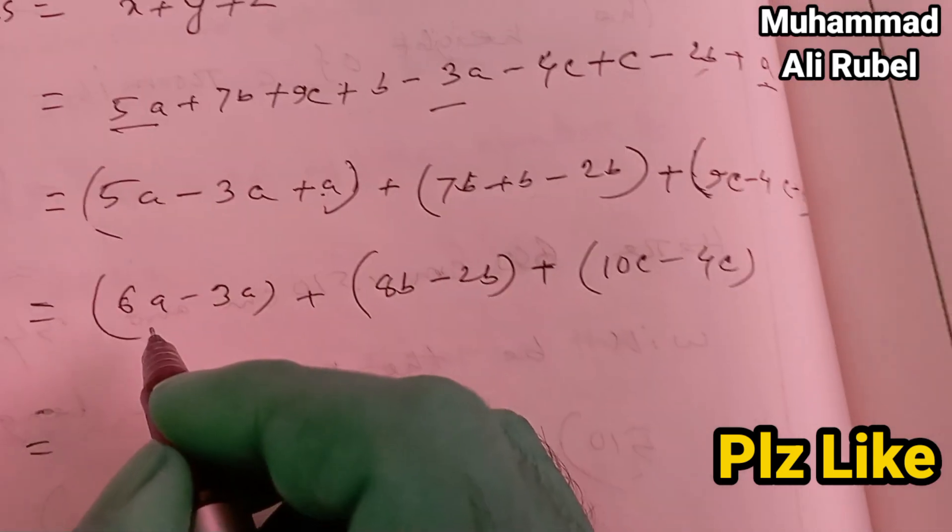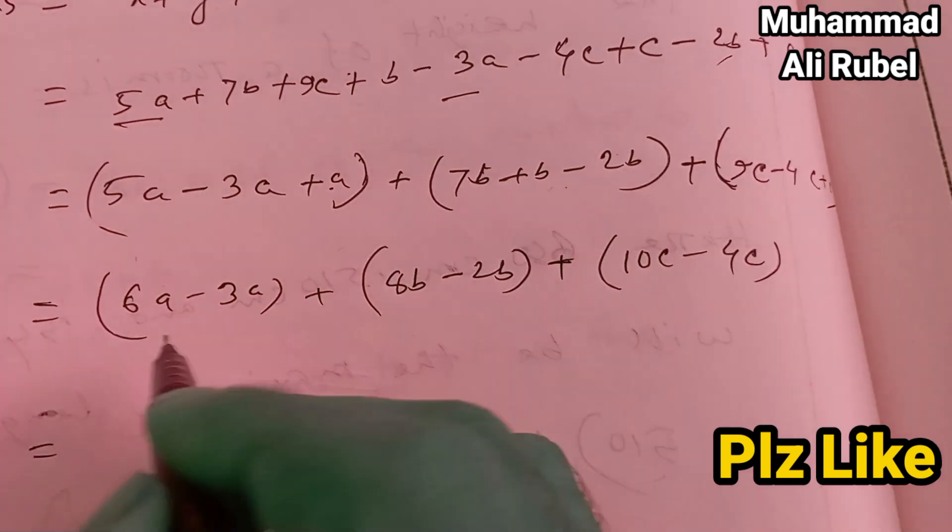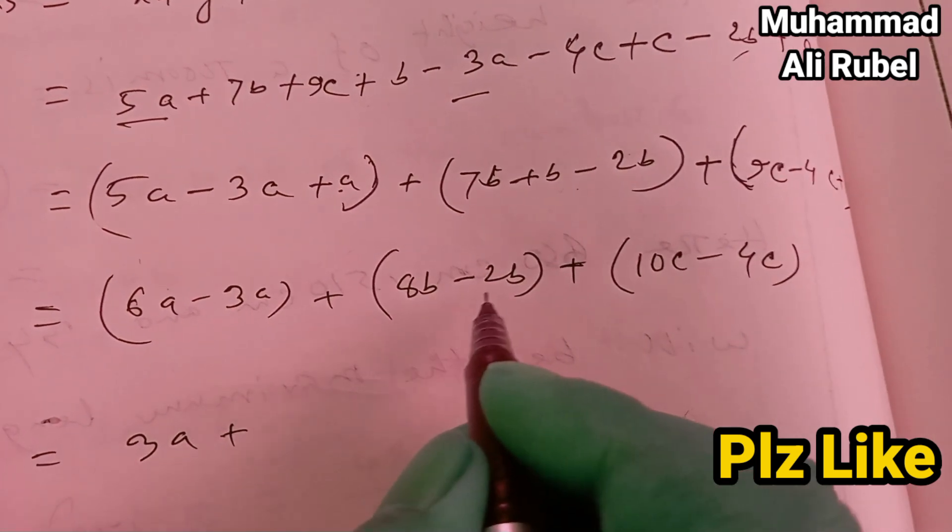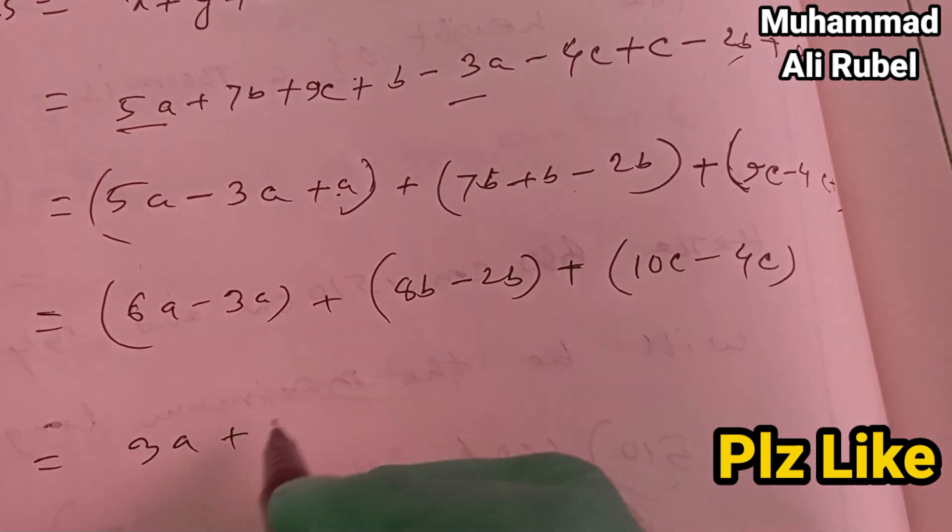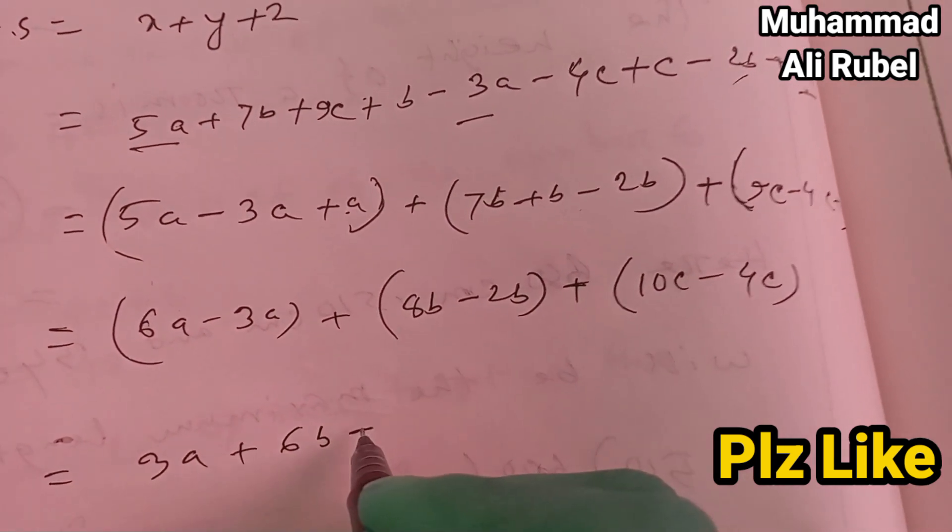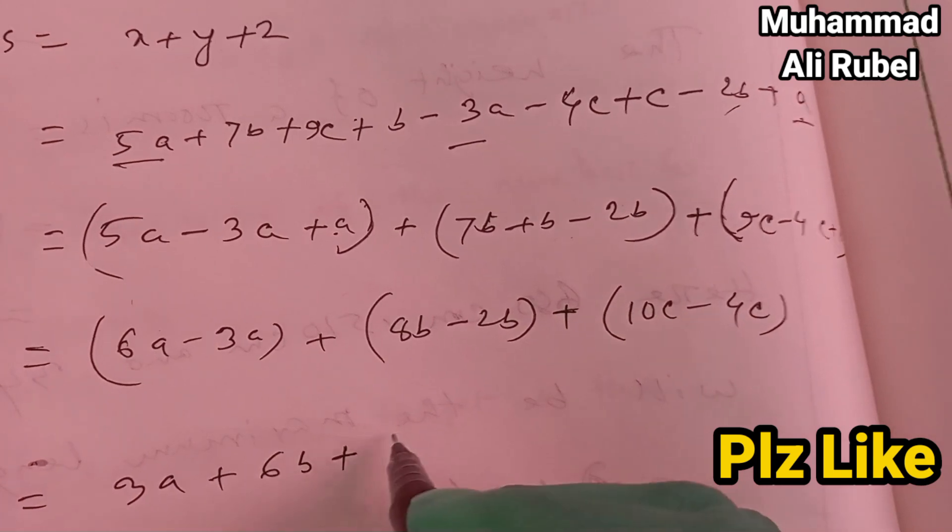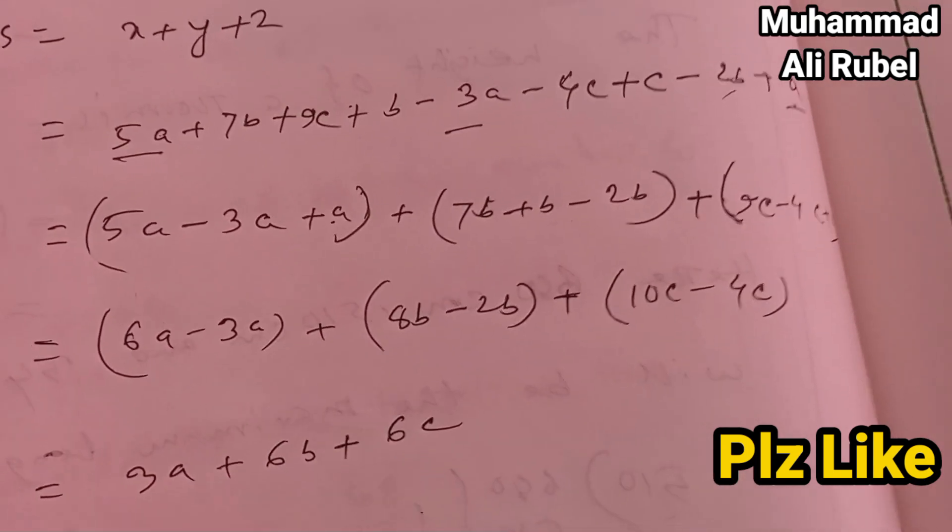So we get 6a minus 3a is 3a. 8b minus 2b equals 6b. Then 10c minus 4c equals 6c.